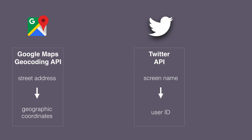For this example we'll revisit the two requests that we set up earlier and saved to a single Postman collection. The first one uses the Google Maps geocoding API to geocode a street address into geographic coordinates. The second one uses the Twitter API, takes in your screen name and returns your user ID and other user info.